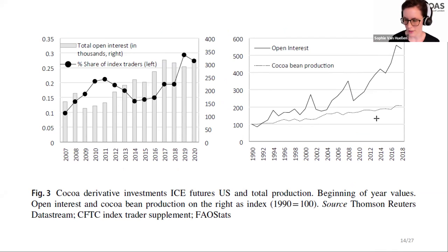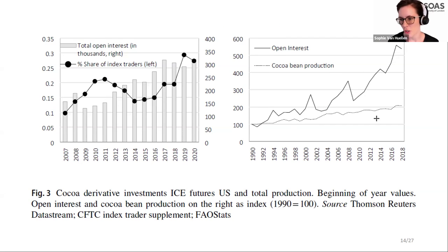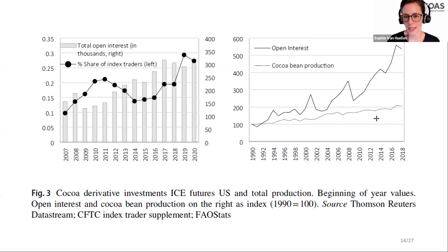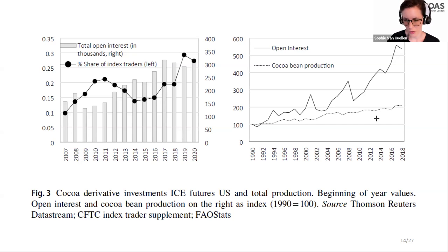This chart shows how much additional financial interest has been channeled into cocoa futures. On the left-hand side is the total open interest — all contracts being traded at the ICE Futures exchange that are cocoa-based. The line shows the share of index traders, which is now up to 30% of all actors in that market. On the right-hand side, we see increasing divergence between actual cocoa bean production and open interest, which began to diverge dramatically from the early 2000s.